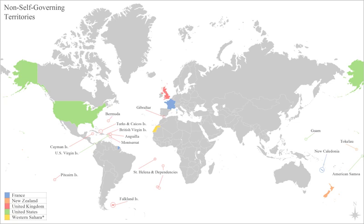In history, a colony is a territory under the immediate complete political control and occupied by settlers of a state, distinct from the home territory of the sovereign. For colonies in antiquity, city-states would often found their own colonies. Some colonies were historically countries, while others were territories without definite statehood from their inception.